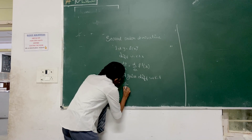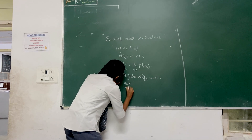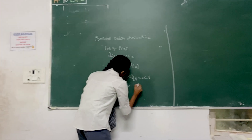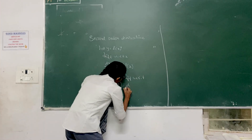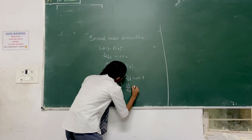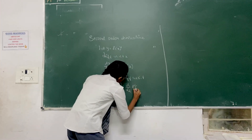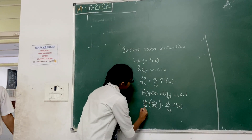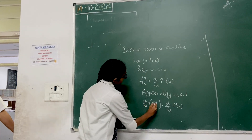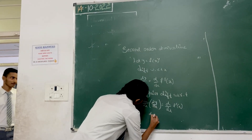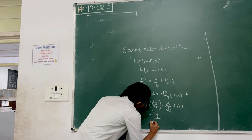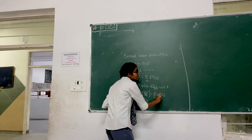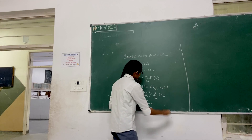Again, differentiate with respect to x — this gives us the second order derivative. d by dx of dy by dx is equal to d by dx of f dash x, which gives f double dash x.